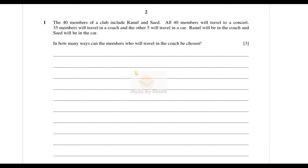Here is question number one. The 40 members of a club include Ranuf and Saeed. All 40 members will travel to a concert — 35 members will travel in a coach and the other five will travel in a car. Ranuf will be in the coach and Saeed will be in the car. The question is: in how many ways can the members who will travel in the coach be chosen?